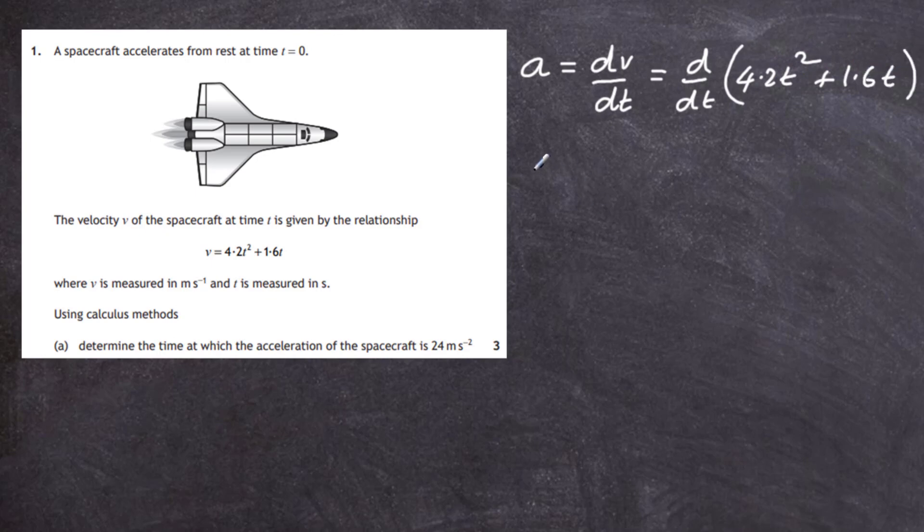So to define the acceleration at any particular time on that journey, we just find the derivative of that expression. So a will become 8.4t plus 1.6.